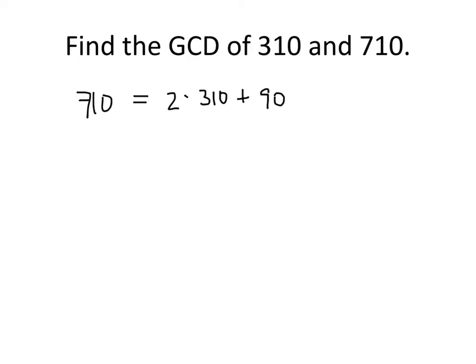So we don't know what the GCD of 310 and 710 is yet. But, and this is what's going to make this whole process work, the greatest common divisor of 710 and 310, whatever it is, is the same as the GCD of these two numbers, 310 and 90. So these two are the same GCD.